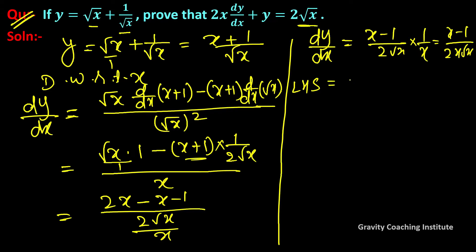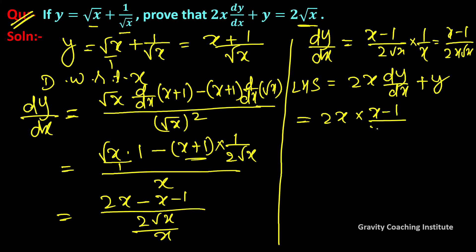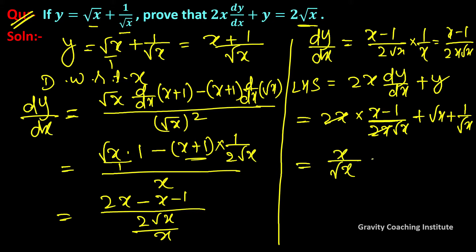So LHS is equal to 2x dy upon dx plus y. So equal to 2x into dy/dx value, which is x minus 1 upon 2x root x, and y value is root x plus 1 upon root x. So 2x cancels, and this fraction will split up. So x upon root x minus 1 upon root x plus root x plus 1 upon root x. So these cancel.